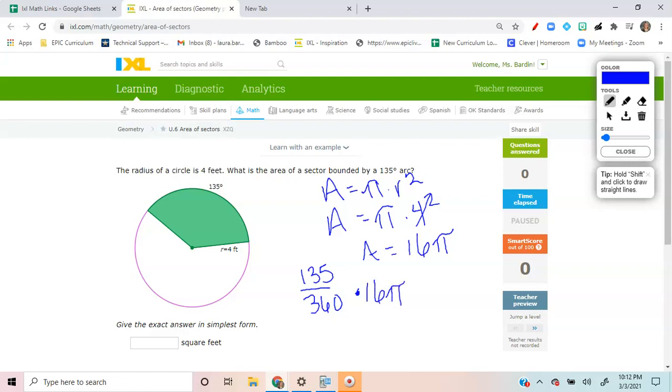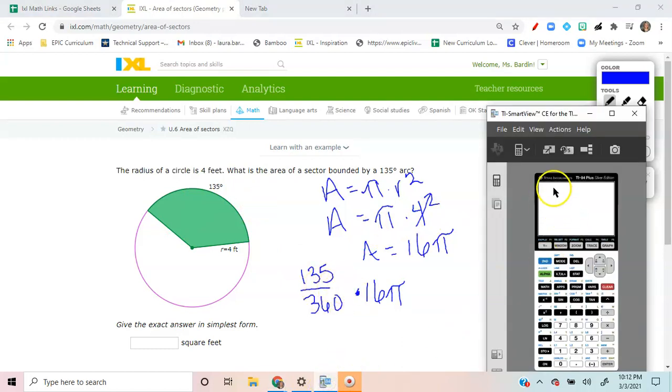And IXL wants to keep pi as part of the answer. So let's just go ahead and grab our calculator and put this measure in. So if you have 135 divided by 360, enter your command. And let's go ahead and times that by 16, keeping it in terms of pi.